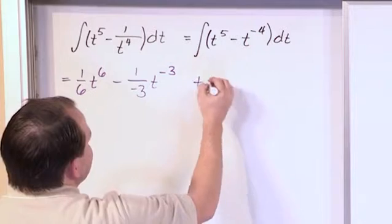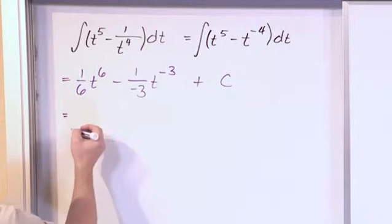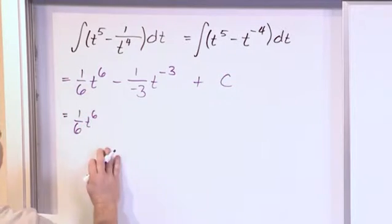Now this is an indefinite integral, so we always have a constant, an arbitrary constant of integration. So simplifying this further, it would be 1/6 t to the 6th power.